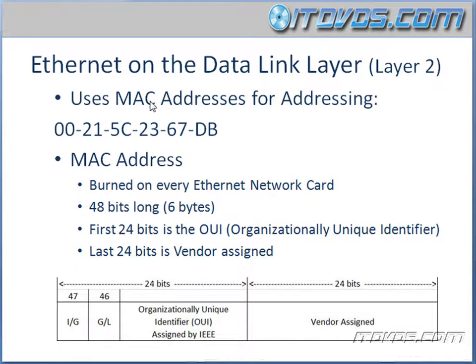The Ethernet protocol functions at layer 2, which is the data link layer. Ethernet uses MAC addresses for addressing, and we've seen MAC addresses before. Here's an example: 00-21-5c-23-67-db. These dashes can also be colons, and we'll see another format as well with periods — it's just a different way of writing a MAC address.